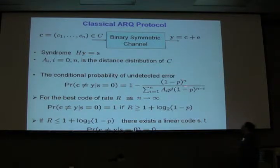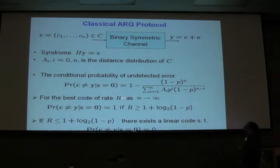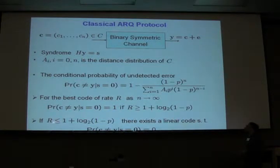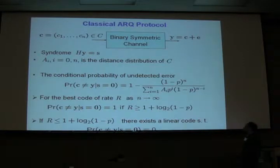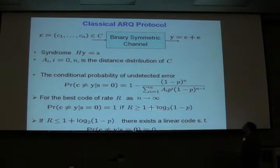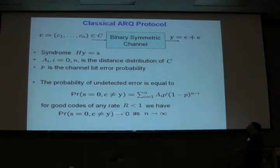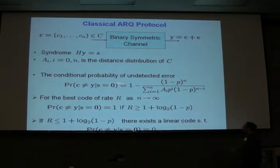This conditional probability can again be written as a function of the distance distribution of code C and error probability in the binary symmetric channel. The expression is a bit more complicated but still manageable. If you analyze this expression, you will see that if the rate of the code is greater than a certain threshold — which depends on the channel — then as the code length tends to infinity, the conditional probability of undetected error tends to 1. Conversely, if the rate is smaller than that threshold, there exists a linear code such that this probability becomes 0. So it probably doesn't make sense to use codes whose rate exceeds this threshold.